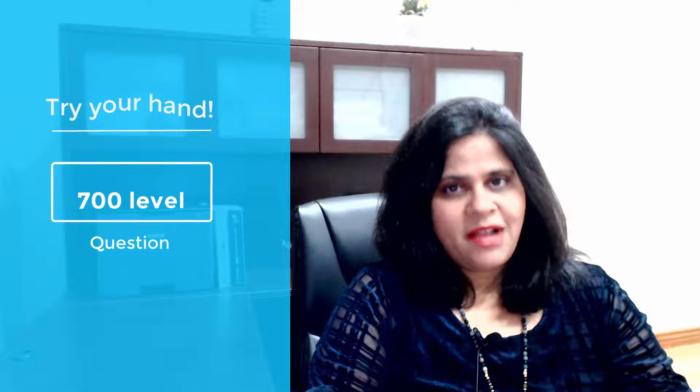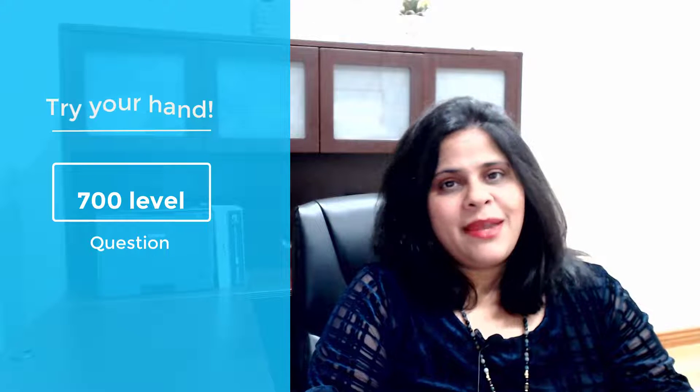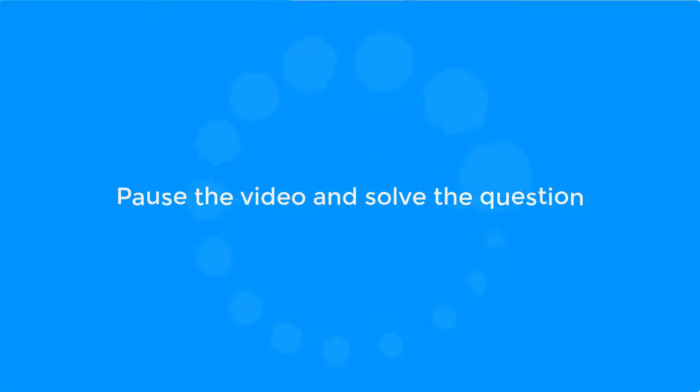Now we're going to talk about the process skill of Consider All Cases. I'm not going to give you any background about this process skill. I want you to first solve the 700 level question for yourself and then we're going to discuss the applicability of this skill. This question is from the UJI Advanced Book. So pause the video, solve the question, and resume when you're ready. Good luck.